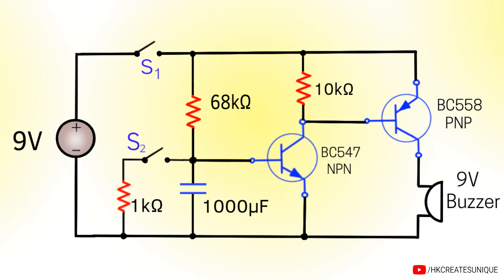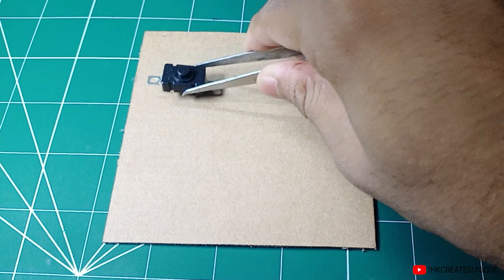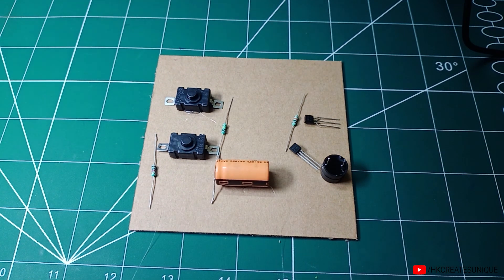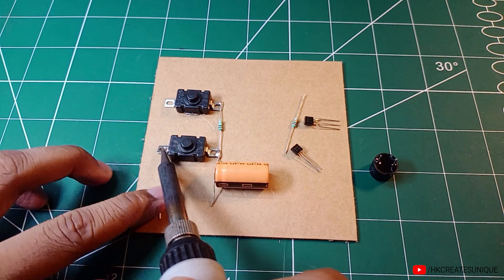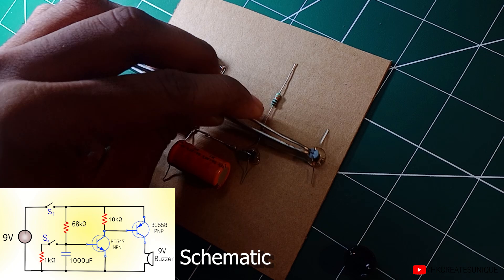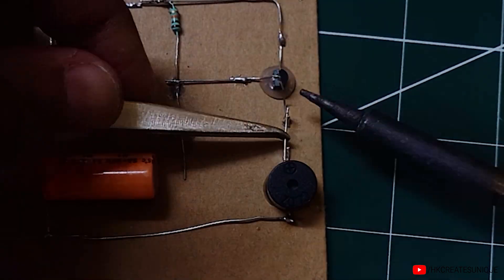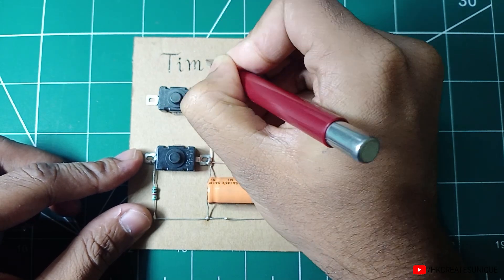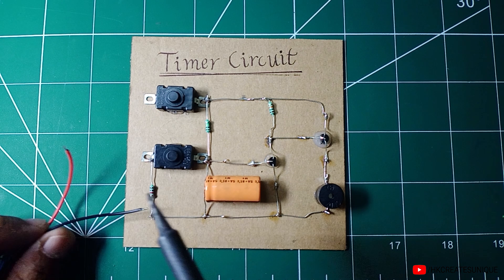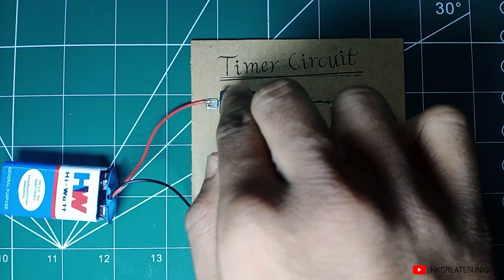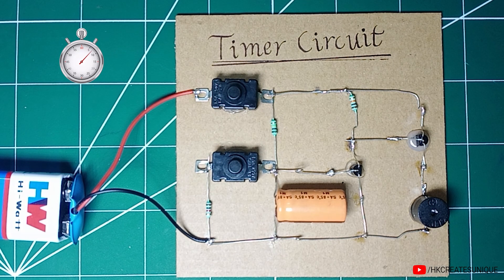This is the final schematic — let's make this circuit. First, I gathered all the components required. Then I glued components such as switches and the capacitor on a piece of cardboard. After that, I soldered the components according to the schematic. After around 15 minutes, the timer circuit is ready. Lastly, I soldered a 9V battery connector to the circuit and connected a 9V battery. Then I turned the charging switch ON — and the circuit works.